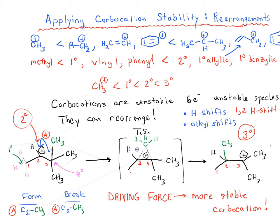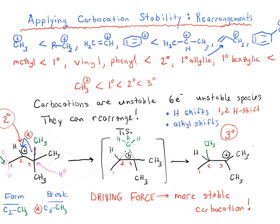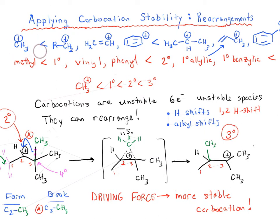We applied the concept of carbocation stability to understand rearrangement reactions in organic chemistry. The driving force for rearrangement reactions is that we're always going from a less stable carbocation to a more stable carbocation. We've got our list of different carbocation stabilities: methyl is the most unstable, and as we go from methyl to primary to secondary to tertiary, it becomes more and more stable. So for a rearrangement to occur, we start with a less stable carbocation and go to a more stable one.